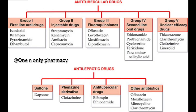Group 5 — drugs of unclear efficacy. These are drugs whose action and duration we are not fully certain about. The four drugs in this group are: Thiacetazone, Clarithromycin, Clofazimine, and Linezolid. These are the five groups of anti-tubercular drugs.